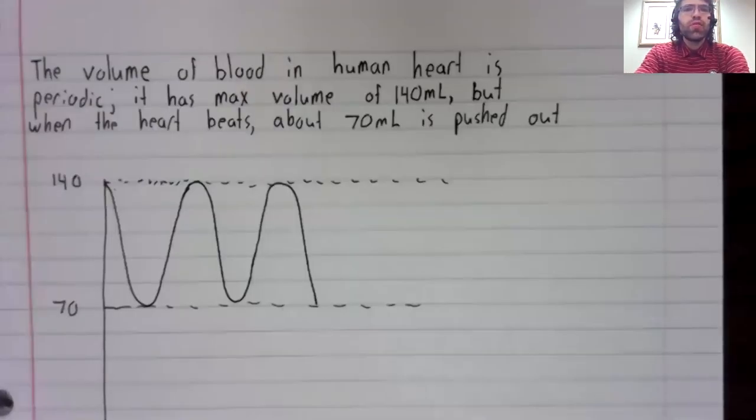The volume of blood in a human heart is periodic. The human heart contains a maximum of about 140 milliliters of blood, but when the heart beats, about 70 milliliters of that is pushed out.